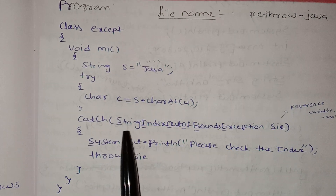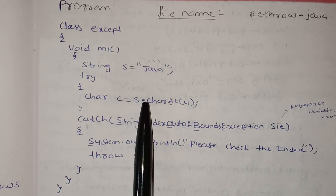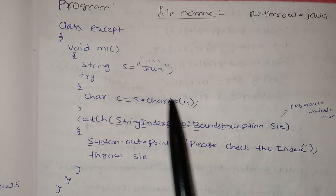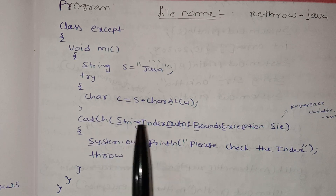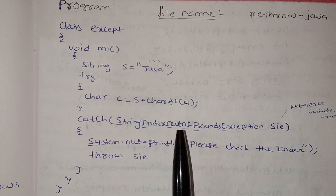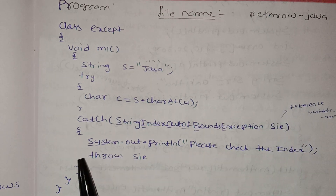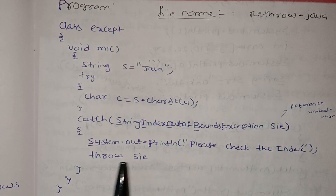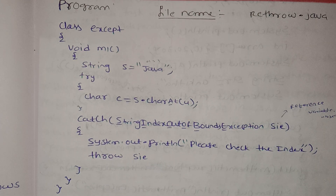The catch block handles the string index out of bounds exception. We will write doubtful code to get the exception, then write a catch block — catch StringIndexOutOfBoundsException with a reference variable. We will write System.out.print 'please check the index', then use throw to re-throw the exception variable.